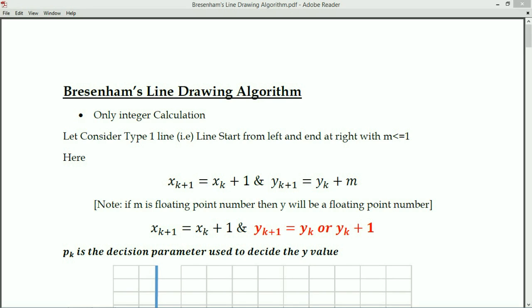Welcome to MOC videos. In the last class we discussed the DDA line drawing algorithm. The main disadvantage of DDA is that you may get floating point x, y values, requiring a round operation. To avoid that disadvantage, we move to the next line drawing algorithm: Bresenham's line drawing algorithm. The main advantage of Bresenham's is that it performs only integer calculations, so we don't need to worry about floating point values.